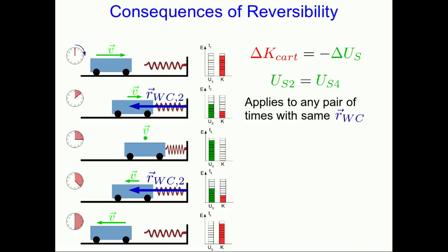Well, this applies to any pair of times, not just two and four, with the same relative position of the cart to the wall. And so that means that the potential energy must only depend on the relative position of the cart to the wall. So I could just define my axes at the wall, and now the position of the cart determines the potential energy of the spring.